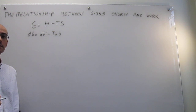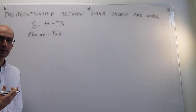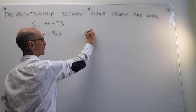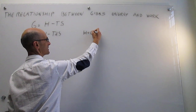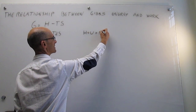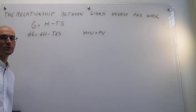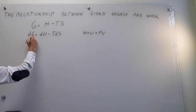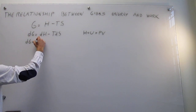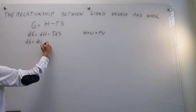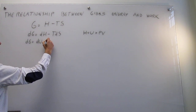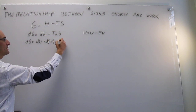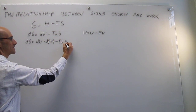The next step is to plug in the definition of enthalpy. The definition of enthalpy from our work in the first law was the internal energy plus the product of the pressure and the volume. So if we incorporate that into our expression, this gives us: dG = dU + d(pV) - T dS.